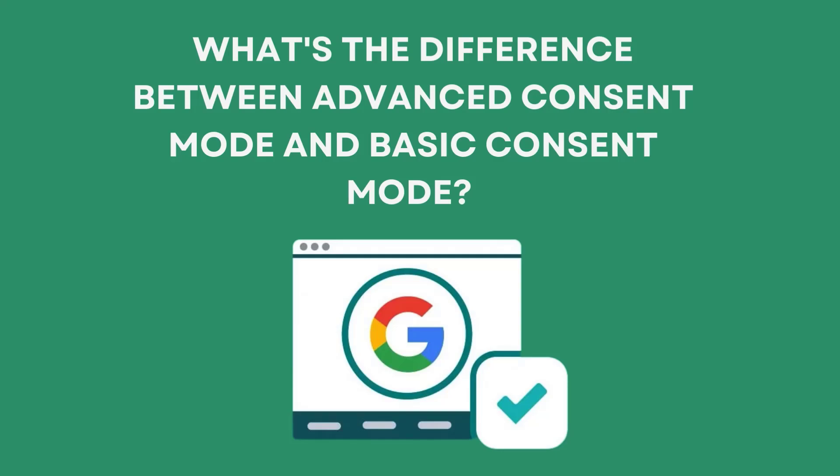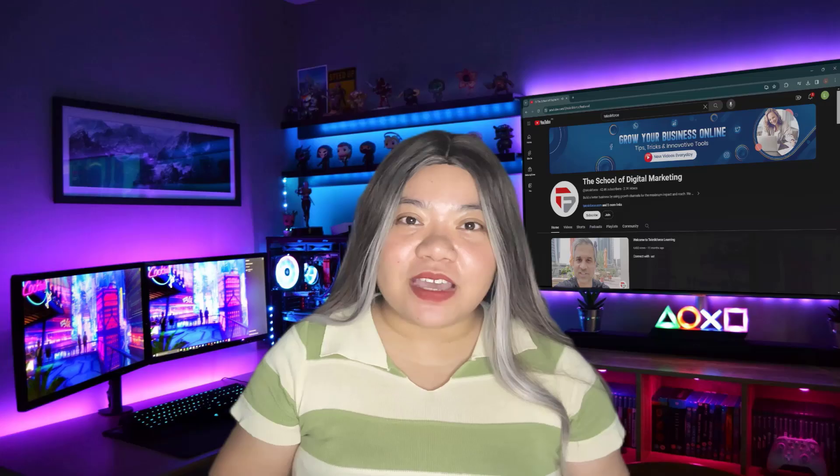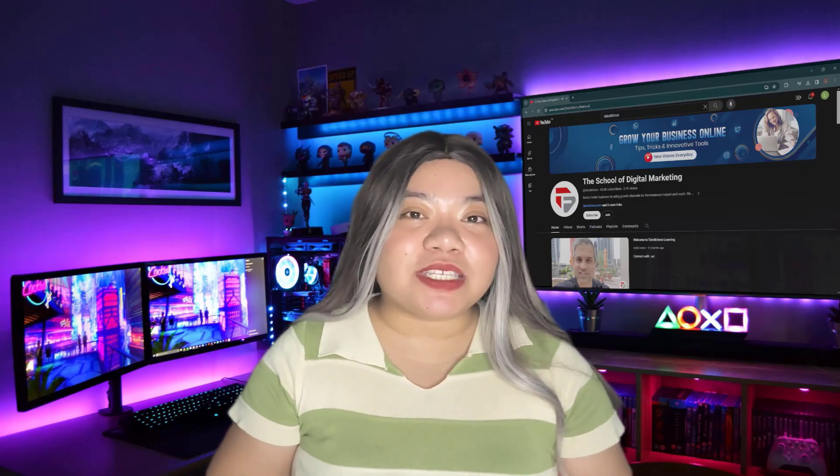Finally, what's the difference between advanced consent mode and basic consent mode? Using advanced consent mode means that tags for Google's platforms, like the Google Tag for Google Ads and Google Analytics, will automatically adjust the data they collect based on people's consent preferences. For example, if you're sending data to Google Analytics, basic information will be sent before consent has been granted. Then, when consent is granted, cookies will be created and the tag will send all of the available information to Google Analytics. Using basic consent mode means that no data will be sent to Google's platforms until consent has been granted, so no data will be sent to Google Analytics until consent is provided.